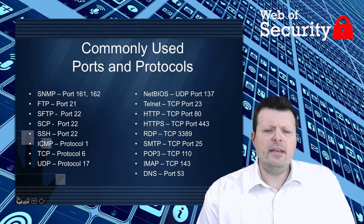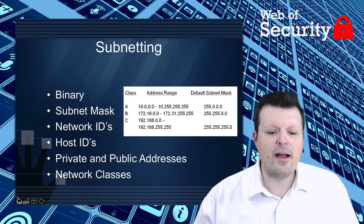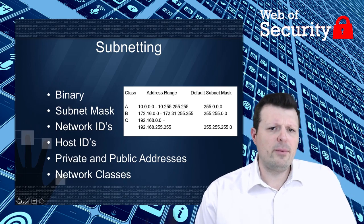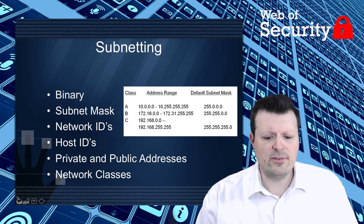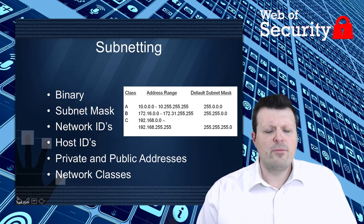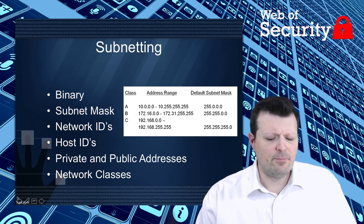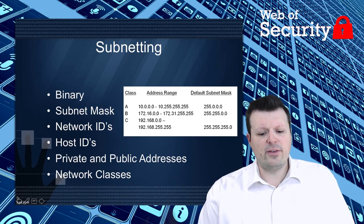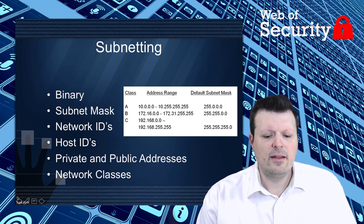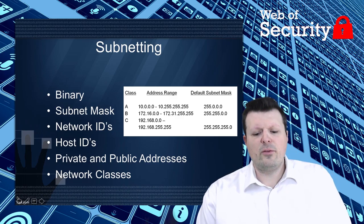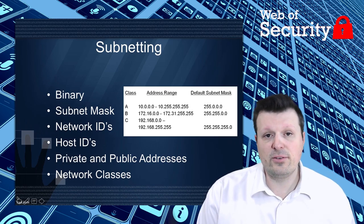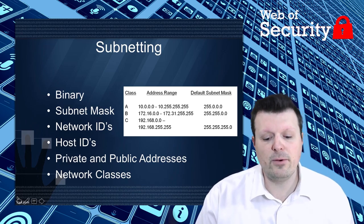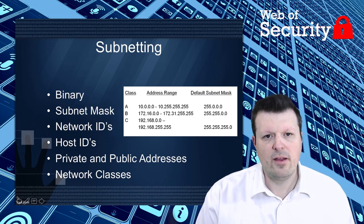Any discussion of TCP/IP requires that we talk about subnetting. The purpose of subnetting is to divide a network into two portions: a network ID on the left-hand side and a host ID on the right-hand side. It's important to understand that the calculations associated with these networks are binary, even though the numbers are represented in decimal on paper.